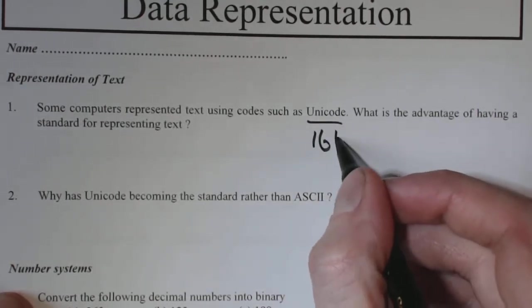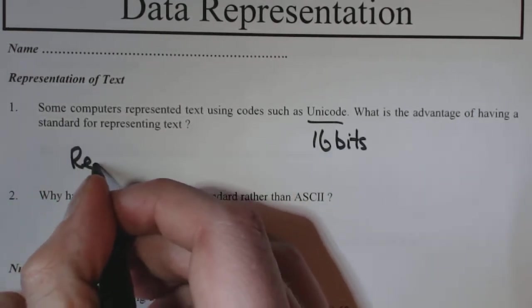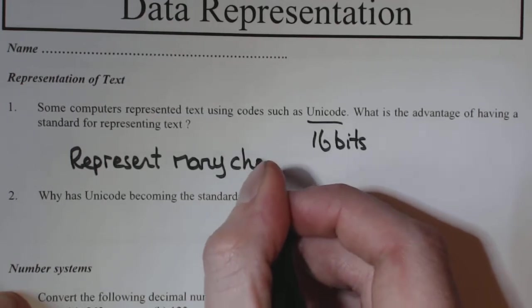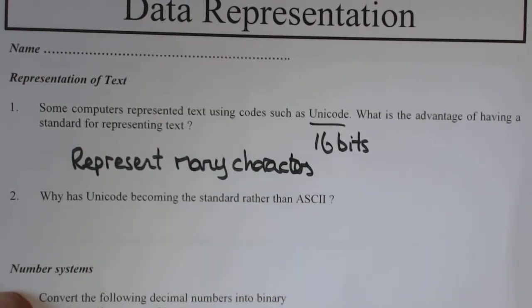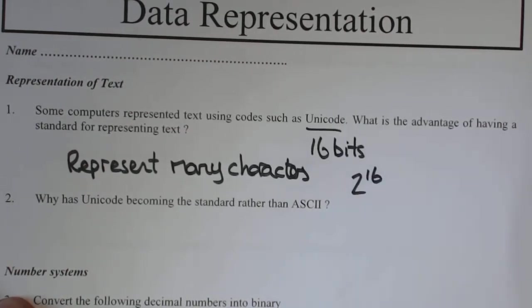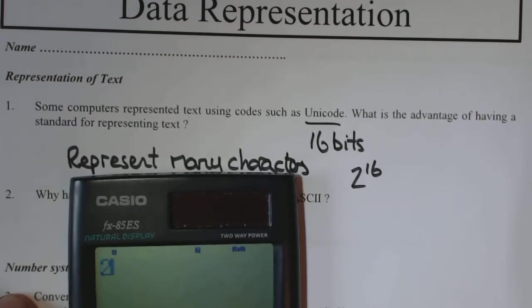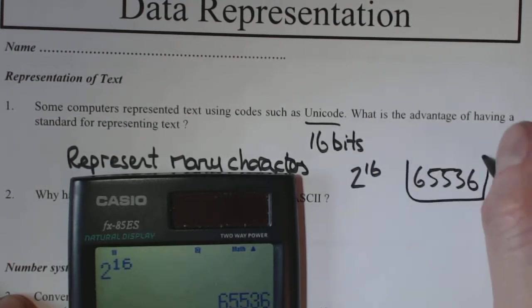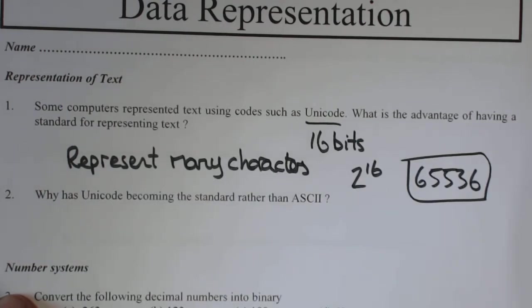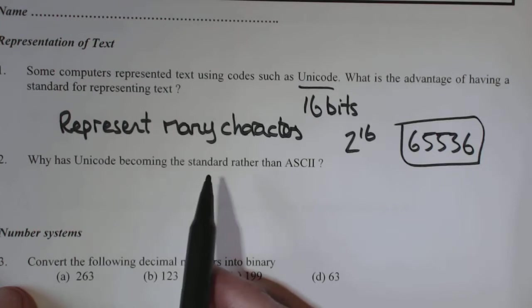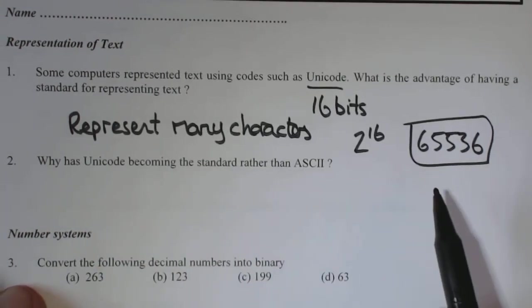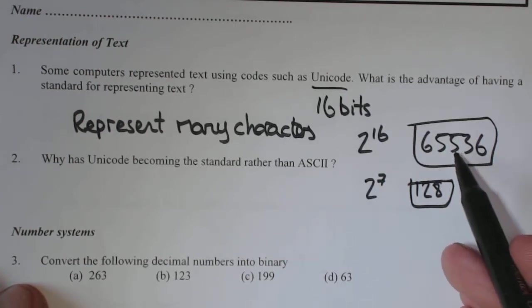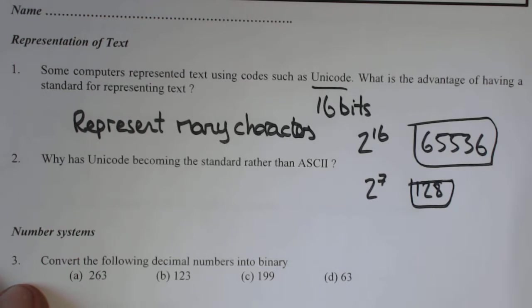Some computers represent text using codes such as Unicode. What's the advantage of representing text using Unicode? Well, hopefully you'll remember, Unicode uses 16 bits for each character. That means you can represent many characters. If you wanted to actually know how many characters, you just go 2 to the power of 16. And feed that into a calculator. So you can actually represent 65,536 characters. So that's why a lot of countries are going down that route.